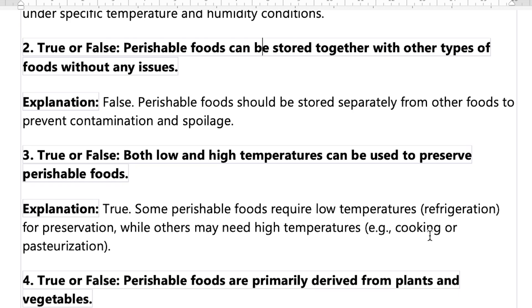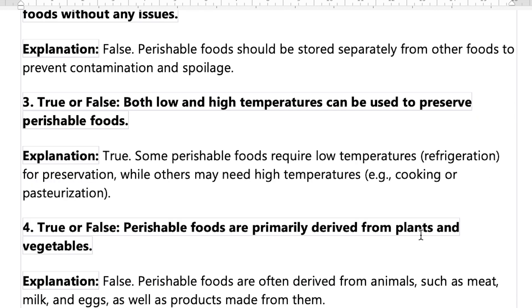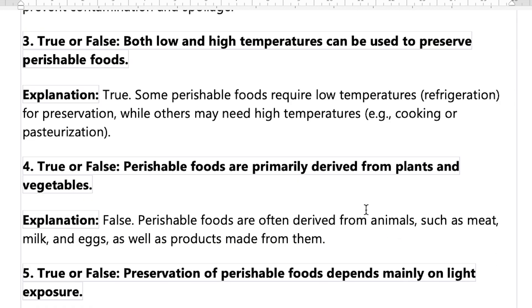Number four: perishable food are primarily derived from plants and vegetables. That's false — we also have meat, milk, and eggs as perishable foods.